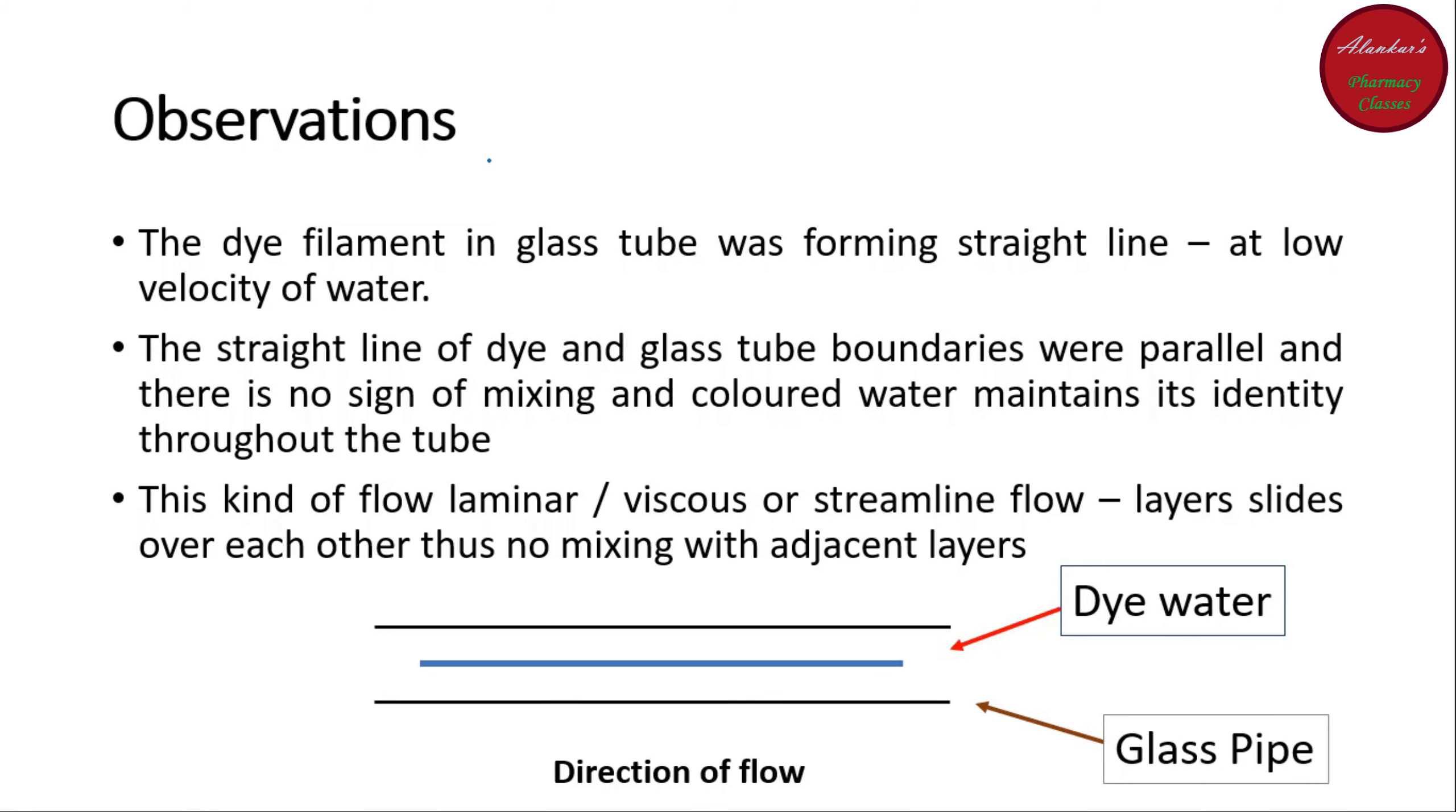So, there are basically three observations. In the first observation, he observed that at the low velocity, the dye filament in the glass tube was forming a straight line. And this is because of the simply the low velocity of water. So, in this case what is happening? He observed there is a straight line of dye. This is the dye line. And there is a straight line of the dye which is actually the parallel to the glass pipe. And the colored water maintains its identity through the pipe.